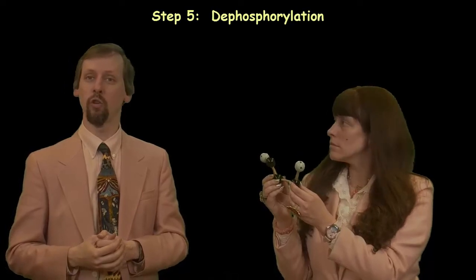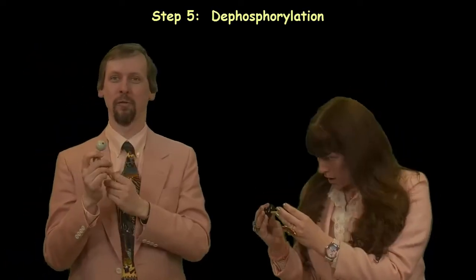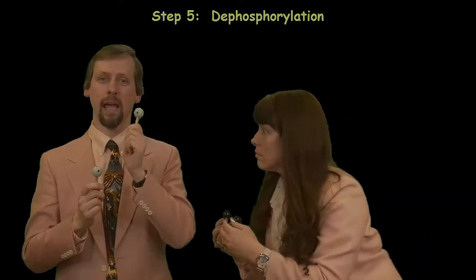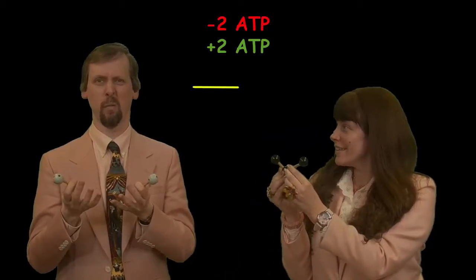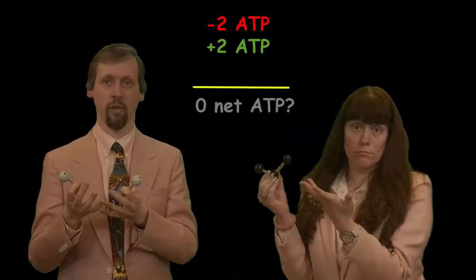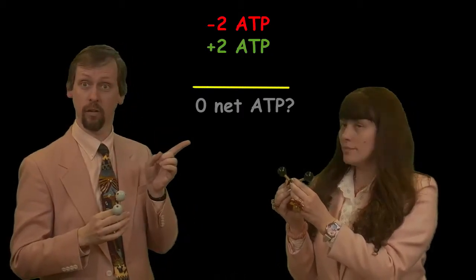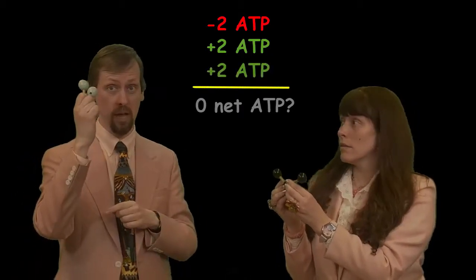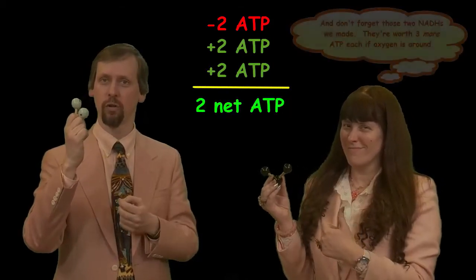Now we're ready for our very last step, which is called dephosphorylation. Two ADP molecules will come along and remove those two phosphates, so we get back an ATP from each one. But remember, we used up two ATPs to start with. Don't forget, we had two PGALs that went into this process, so you picked up two ATPs directly from the other PGAL. So we're now two to the good.